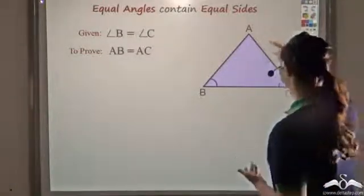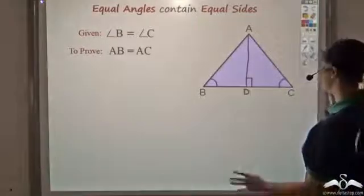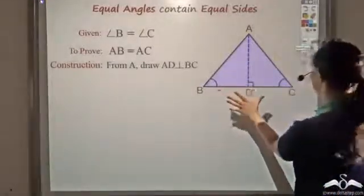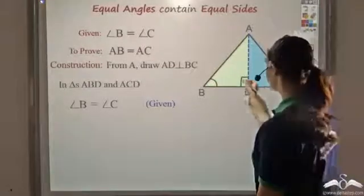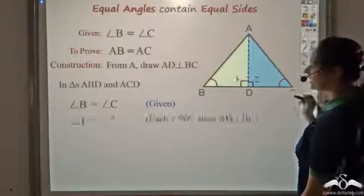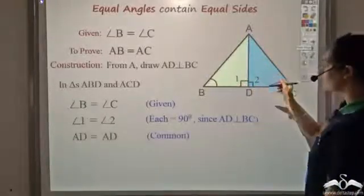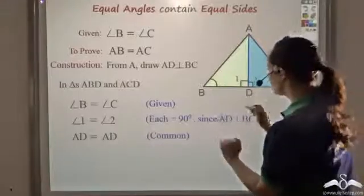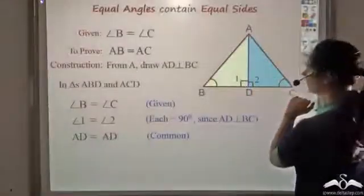Again, I will draw a perpendicular from A; let us call this point D, so AD is perpendicular to BC. Now in these two triangles: angle B is equal to angle C — that is given. The second thing is, since AD is perpendicular to BC, angle 1 and angle 2 are each 90 degrees, so angle 1 is equal to angle 2. The third thing is AD, which is being shared by both triangles, so AD is equal to AD — it is common. Now I don't have a hypotenuse to use directly, so I cannot use RHS. I have one angle, a second angle, and a side — angle, angle, side. So these two triangles are congruent by Angle-Angle-Side.